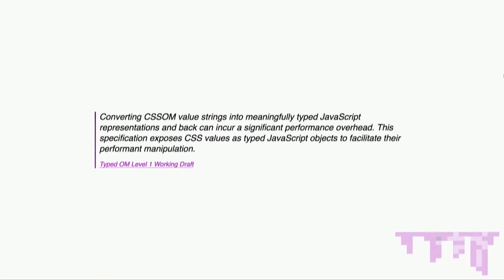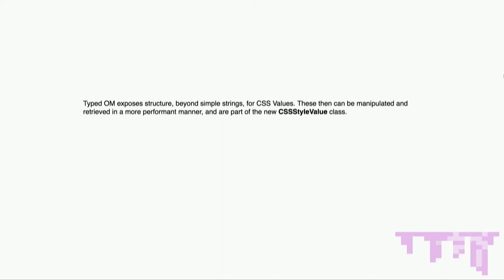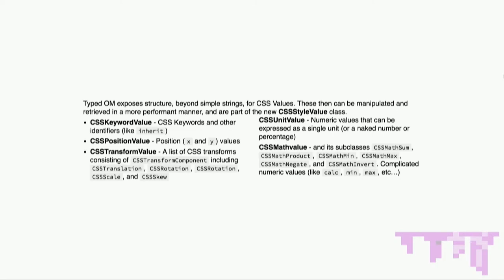Part two: the Typed OM, also known as CSSOM V2. From the draft spec: converting CSSOM values from strings into meaningfully typed JavaScript representations and back incurs a really high performance overhead. What Typed OM looks to do is expose CSS values as typed JavaScript to facilitate performant manipulation. Typed OM exposes structures beyond simple strings for CSS values. These can be manipulated more performantly as part of the new CSS style value class and its subclasses. There are five main subclasses: keyword value, position, transform value, unit, and math value.